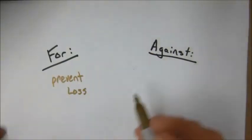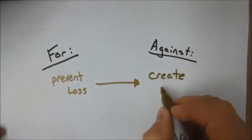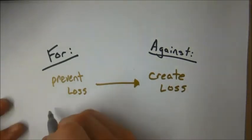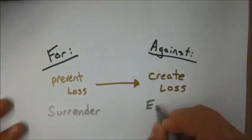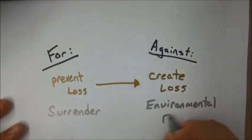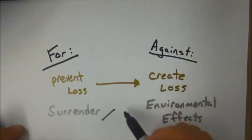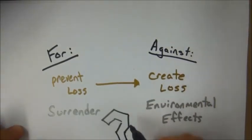Many debate the use of the atomic bomb. Do we prevent the loss of American lives, but create a number of losses in the Japanese mainland? It would likely lead to the surrender of the Japanese, but it would then have major environmental effects that continue until today.